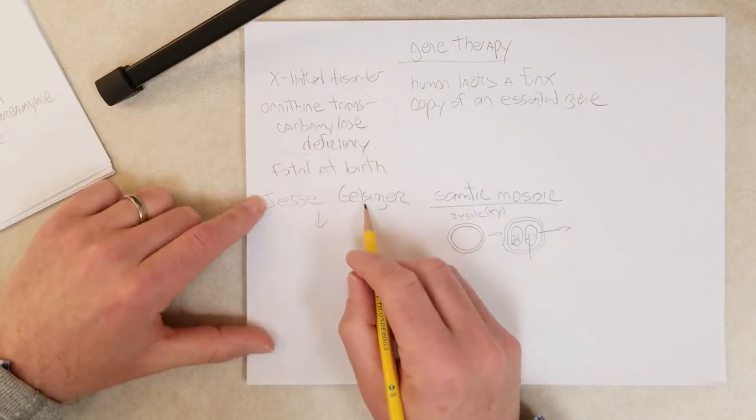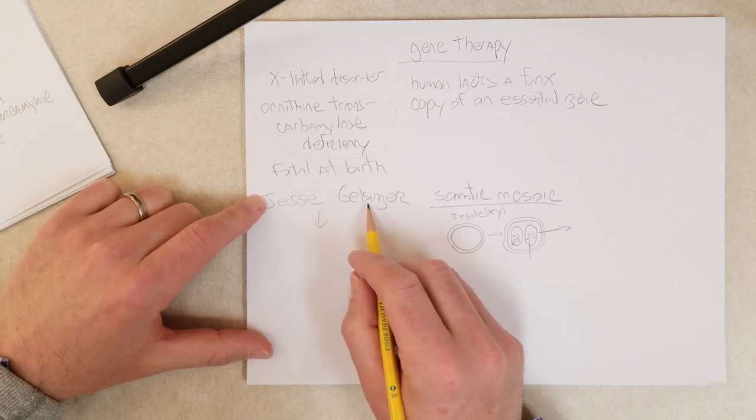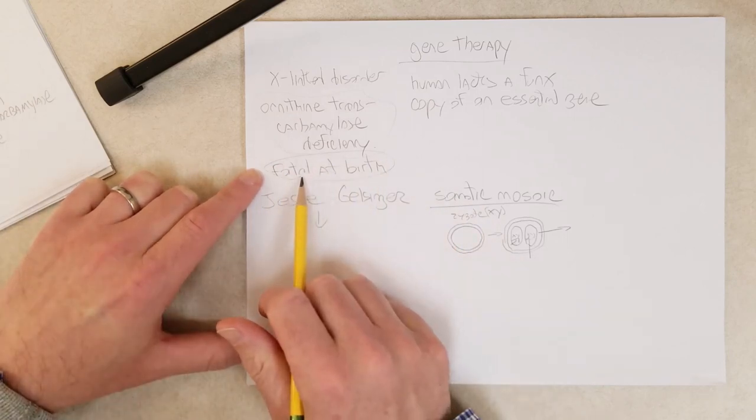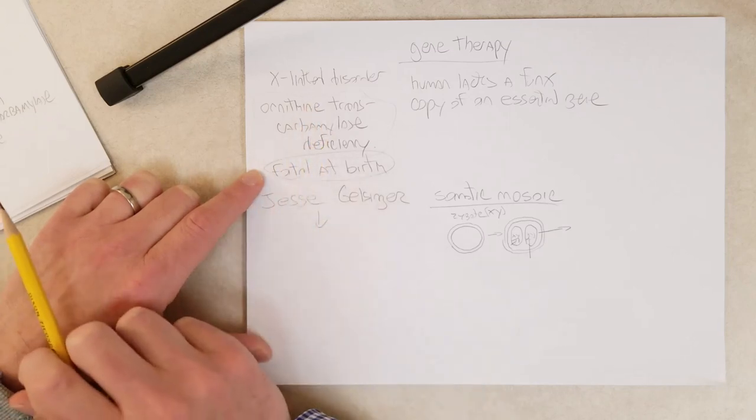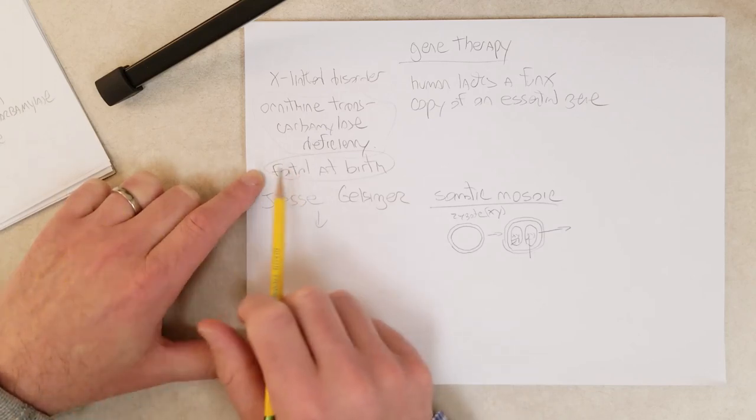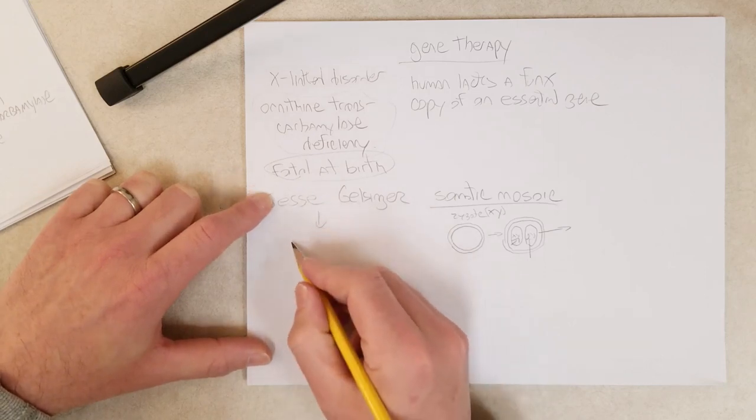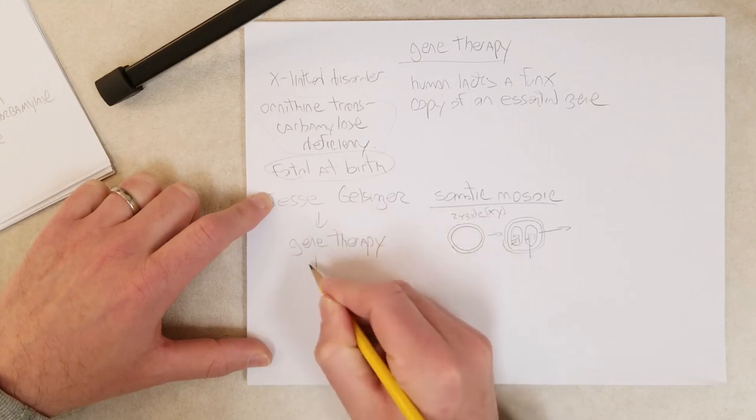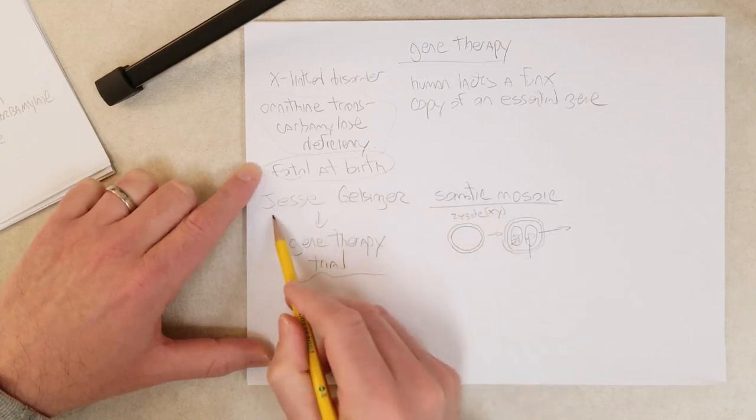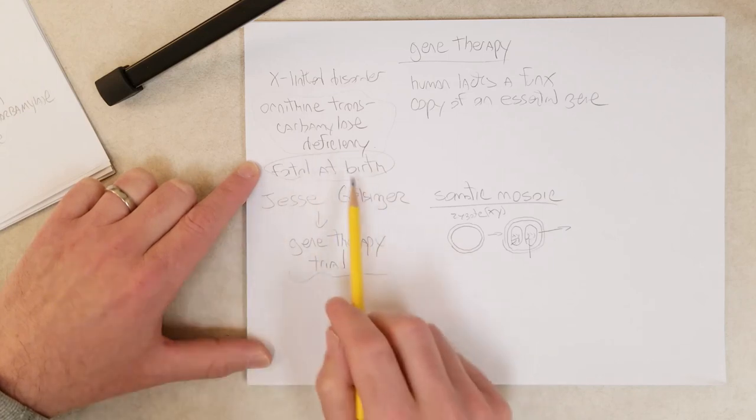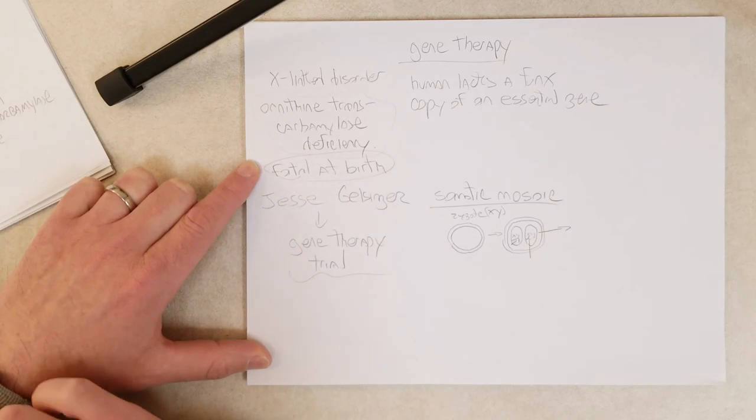But he was also very interested in contributing to therapies that could help cure these individuals who die essentially at birth because they lack a functional copy of this gene. So he wants to help these individuals who cannot survive, who have the most severe form of the disease. So Jesse enrolled in a gene therapy trial. Even though he was mostly okay and can live a normal life, he volunteers for the gene therapy trial to help find a cure for those who have the severe form of the disorder.